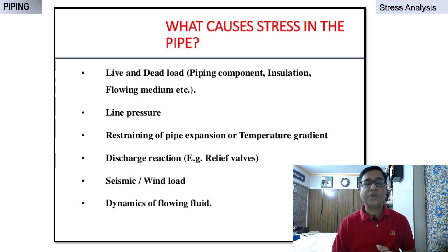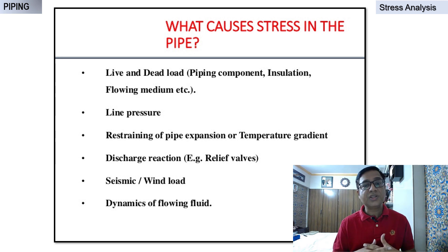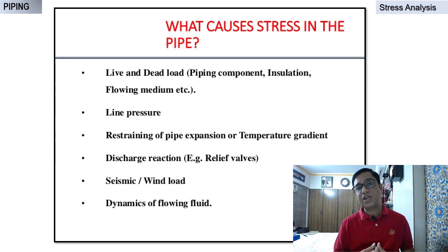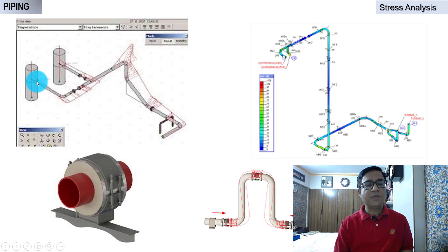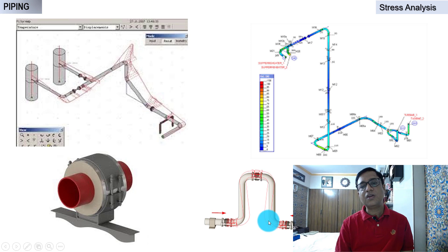What causes stress in pipes? One is the live load — the load of the piping itself — then line pressure from the fluid flowing at certain pressure, restraining of pipe expansion and thermal gradient, discharge reaction, seismic loads depending on the zone, wind loads, and dynamics of the fluid. You can see how the stress is shown in the analysis — there are various stress ranges. Pipes anchored at both ends will have stress like shown. The stress analysis output determines what kind of supports are required.